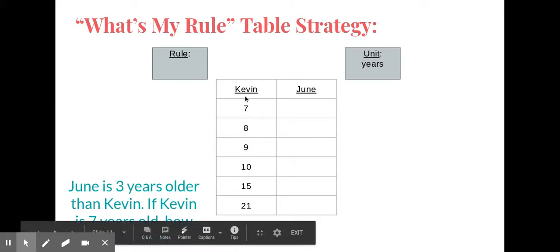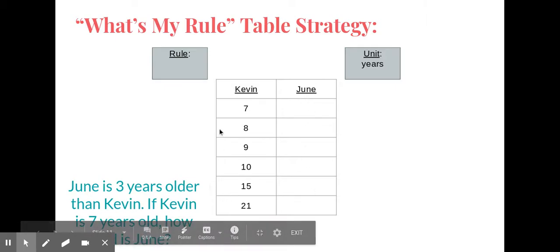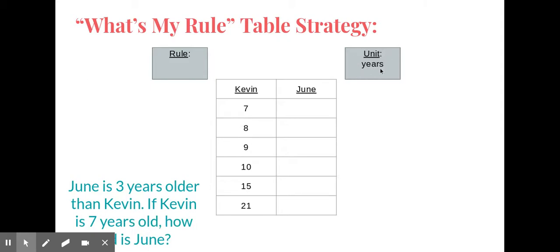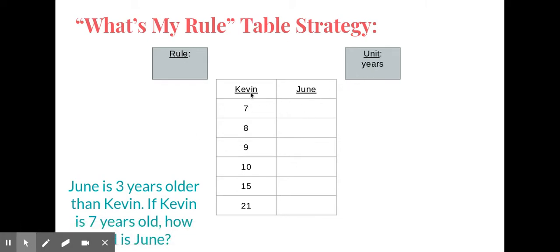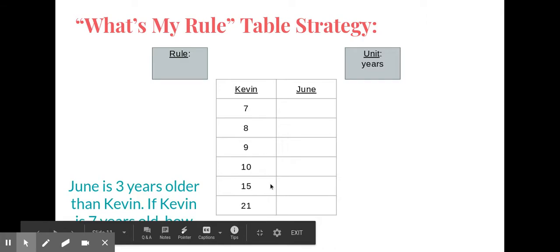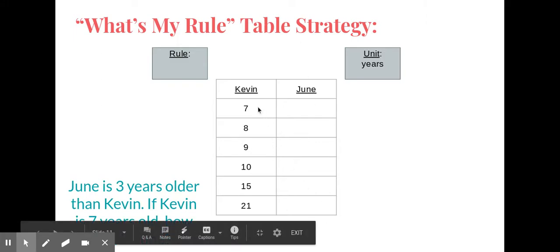This right here is a table where it says Kevin and lists numbers down in the column, and there's another column for June. This is called a table. What we do is we find a unit — in this case it's years, because the number story says June is three years older than Kevin and we want to know how old June is. I've already put the ages of seven, eight, nine, and so on for Kevin.